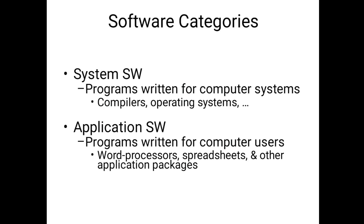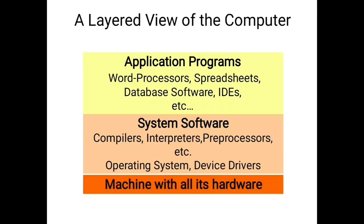We have two types of software categories: system software and application software. System software refers to programs written for computer systems, like operating systems — Windows 10, Windows 7, Windows 98, Linux, and Unix. Application software consists of programs written for end users, like word processors, spreadsheets, and user-related applications — for example, converting manual work to automation. Examples of application software include Tally and ticket booking systems.